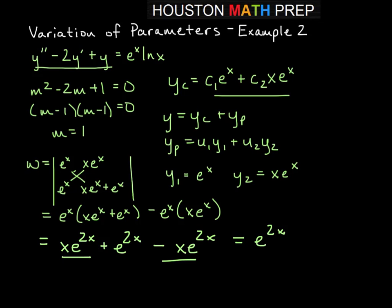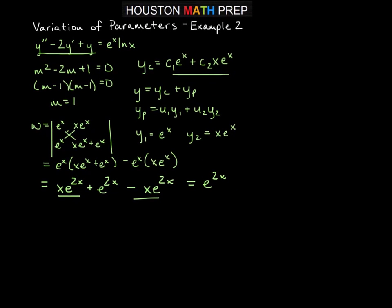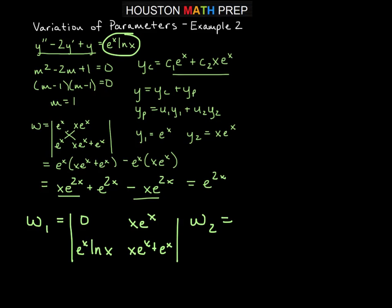Now we need w1 and w2. Remember we get w1 and w2 by replacing the first and second columns with a 0 and g of x. So w1 is going to be the determinant with 0 and e to the x ln x based on our g of x up here. And then we don't touch the second column, so the second column stays x e to the x and x e to the x plus e to the x.